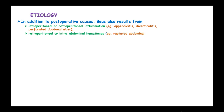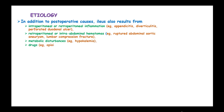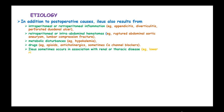Other causes include retroperitoneal or intraperitoneal hematomas such as ruptured aneurysm, lumbar compression fractures, metabolic disturbances like hypokalemia, and drugs including opiates, anticholinergics, and sometimes calcium channel blockers. It can also occur in association with renal or thoracic diseases like lower rib fractures, lower lobe pneumonia, or myocardial infarction.